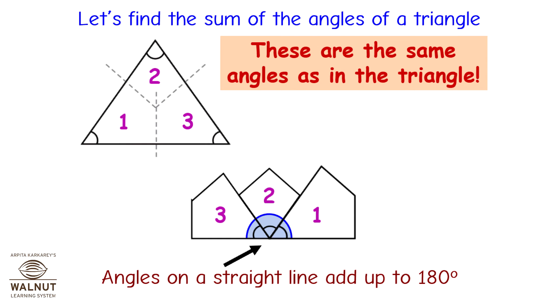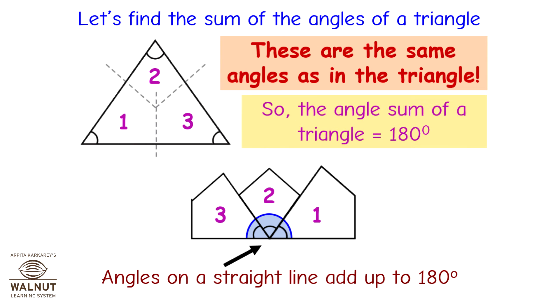Angles on a straight line add up to 180 degrees. So the angle sum of a triangle is equal to 180 degrees.